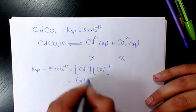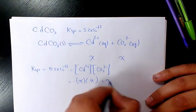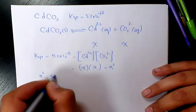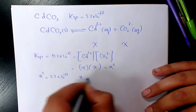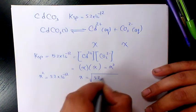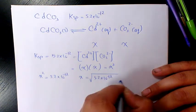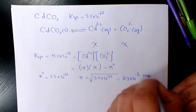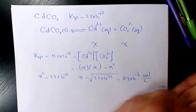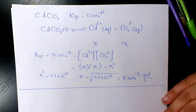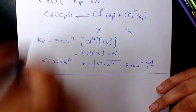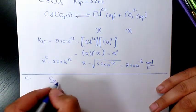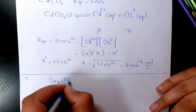That equals X times X, which is X². So X² equals 5.2 times 10 to the power of negative 12, and X equals the square root of 5.2 times 10 to the power of negative 12. The answer is 2.3 times 10 to the power of negative 6 moles per liter — that's the molar solubility of cadmium carbonate.